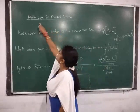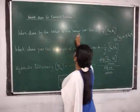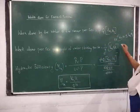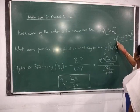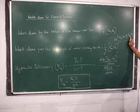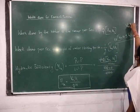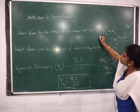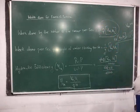Here you can see work done for a Francis turbine. Work done by the water or the runner per second is given by rho into Q into V_W1 into U1. The general formula is rho into Q into (V_W1 into U1 plus or minus V_W2 into U2). Since in case of Francis turbine V_W2 equals 0, this term becomes 0, and work done for Francis turbine is given as rho Q into V_W1 into U1.